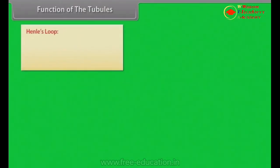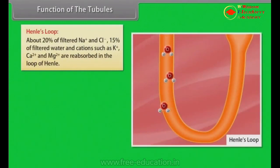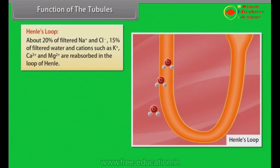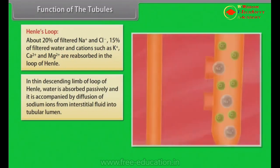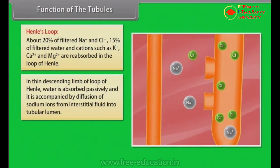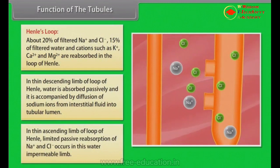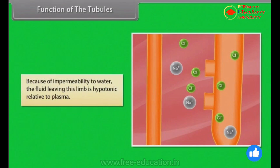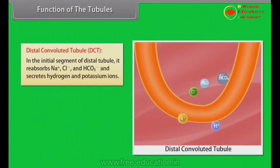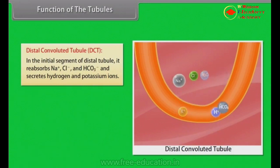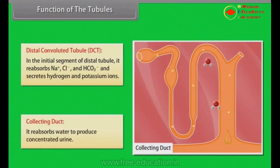Function of the tubules — Loop of Henle. About 20% of the filtered Na+ and Cl-, 15% of filtered water, and cations such as K+, Ca2+, and Mg2+ are reabsorbed in the loop of Henle. In the thin descending limb, water is absorbed passively, accompanied by diffusion of sodium ions from interstitial fluid into the tubular lumen. In the thin ascending limb, limited passive reabsorption of Na+ and Cl- occurs; this limb is impermeable to water, so the fluid leaving it is hypotonic relative to plasma. Distal convoluted tubule (DCT): it reabsorbs Na+, Cl-, and HCO3- and secretes hydrogen and potassium ions. The collecting duct reabsorbs water to produce concentrated urine.